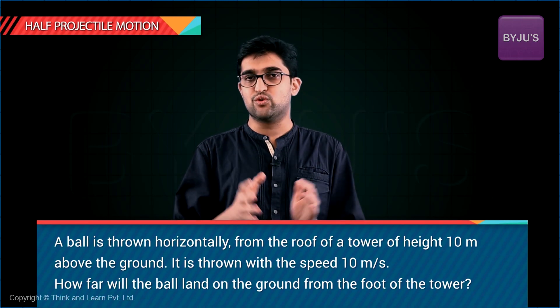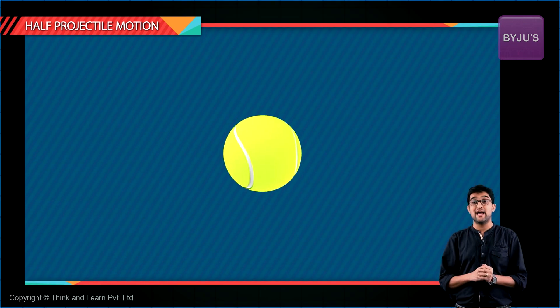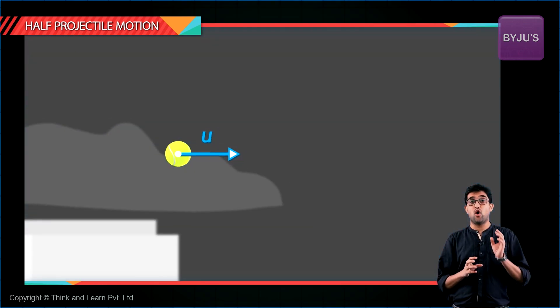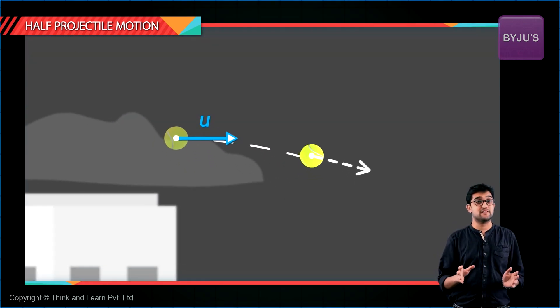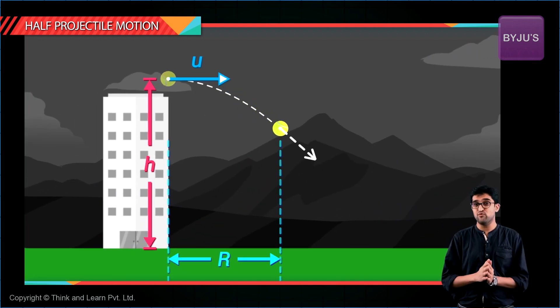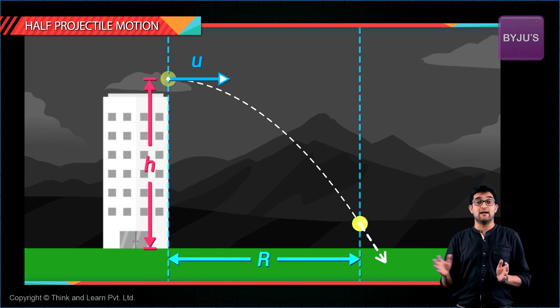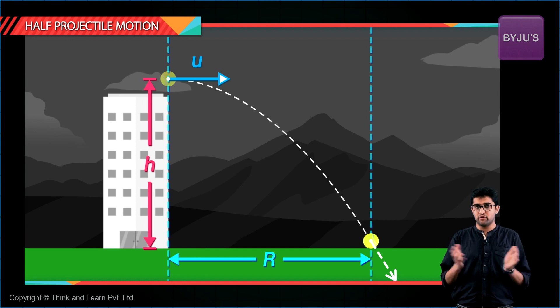Let me solve a half projectile question using this approach. The question you can see on the screen has a ball thrown horizontally at 10 meters per second from a height of 10 meters. The question is how far from this point of throwing will the ball land once it hits the ground.